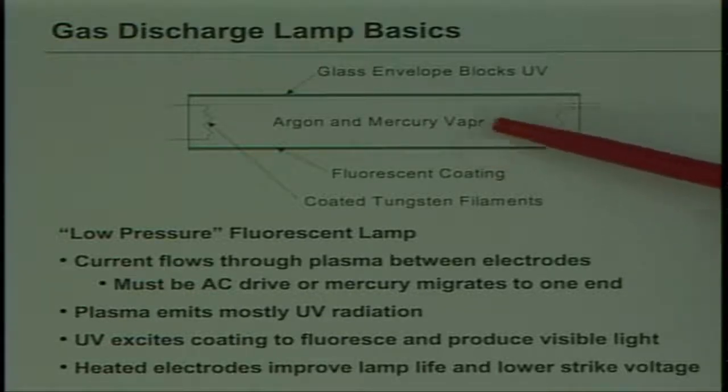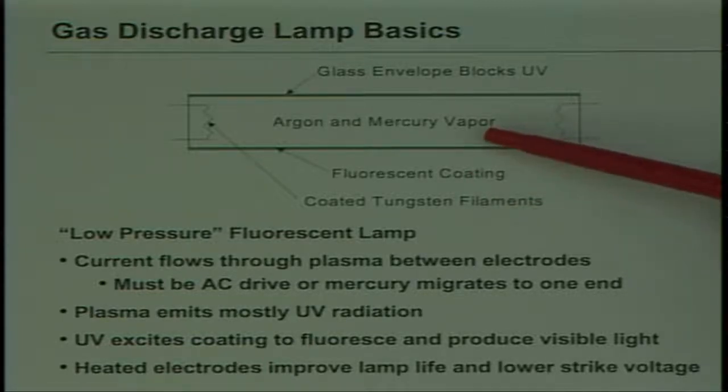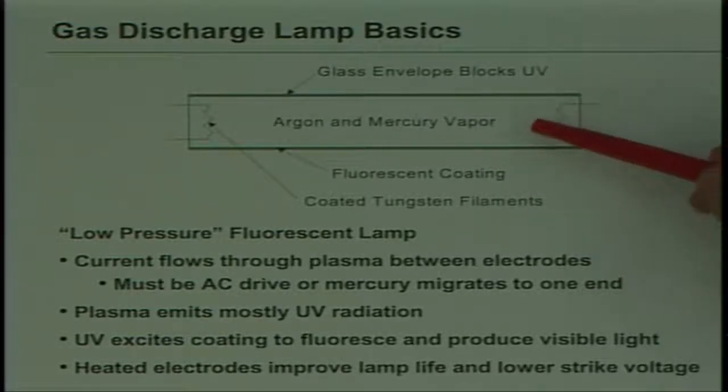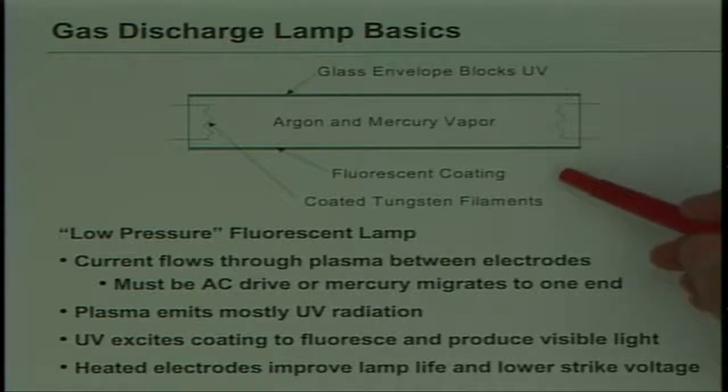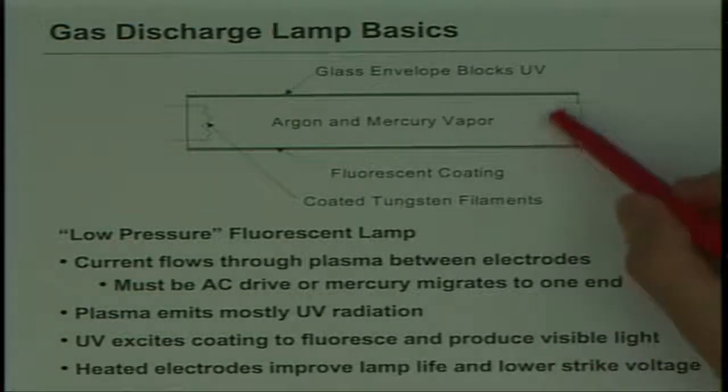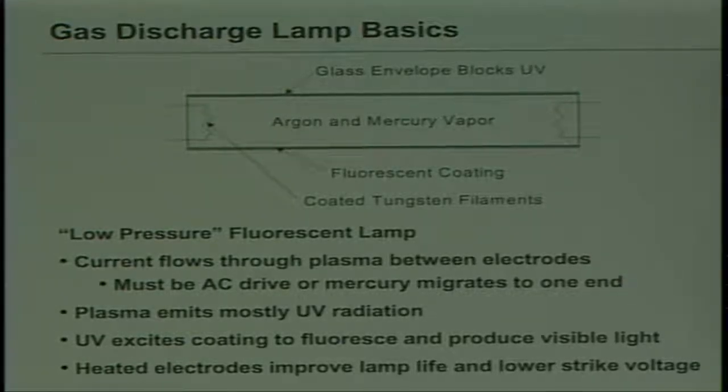That's the gas inside. When you excite that, you create a plasma, and the fluorescent coating is actually what produces the majority of the light. The plasma generally produces ultraviolet radiation, and that is what's used to then excite the phosphor. On each end, there are these tungsten filaments. Some lamps have just simple electrodes, but the filaments give the advantage that you can preheat them and it lengthens the lamp lifetime.